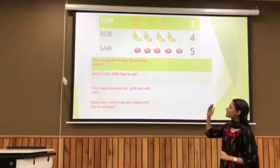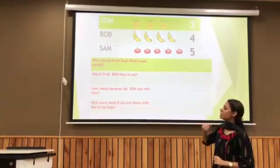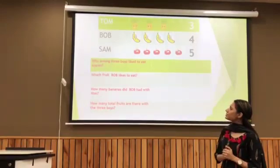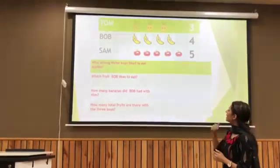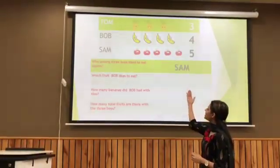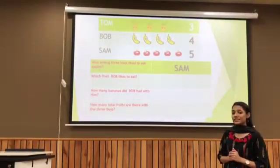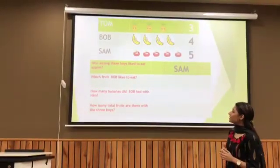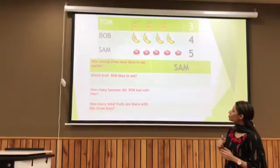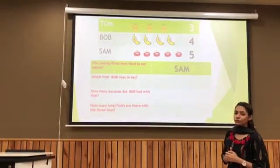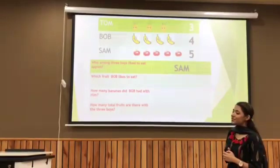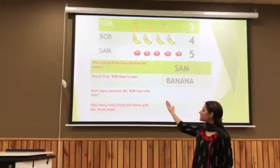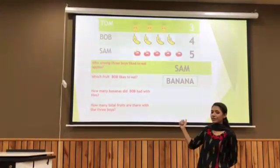Who among the three boys likes to eat apples? Let us look at the flow chart to find out which boy loves to eat apples. The answer would be Sam. The next question: which fruit does Bob like to eat? Let us see in the flow chart which is the favorite fruit of Bob. The answer is banana.